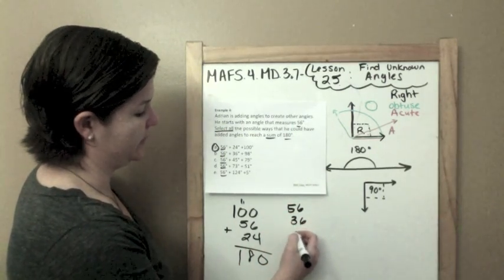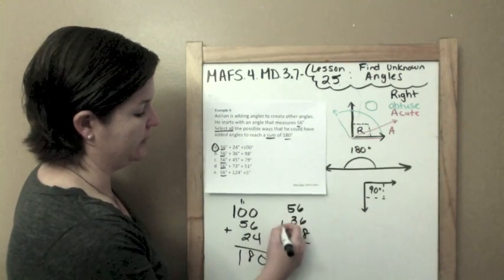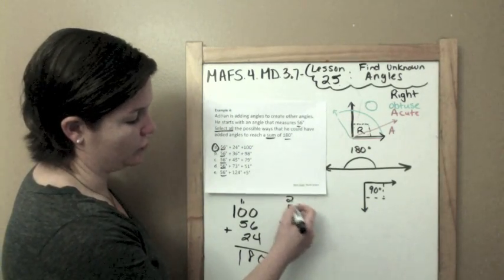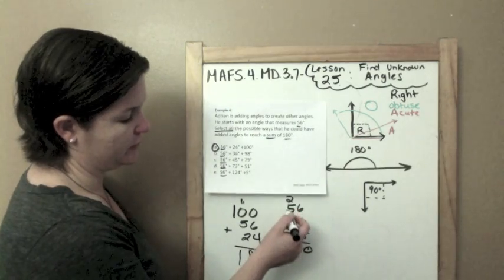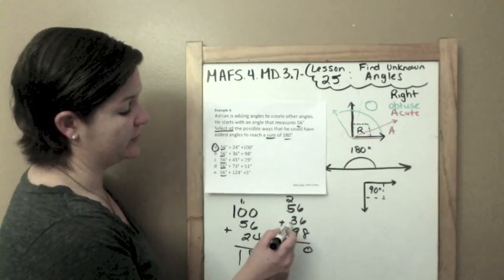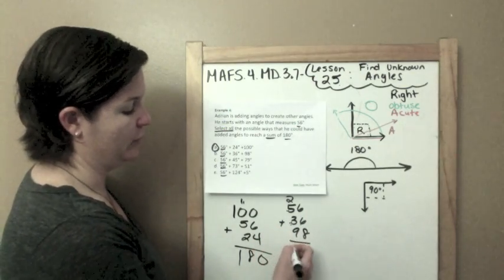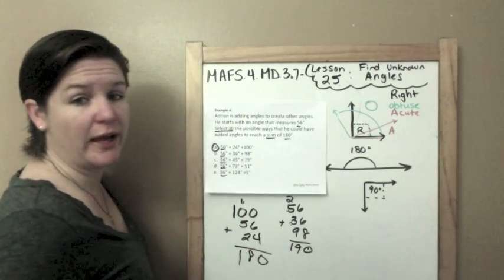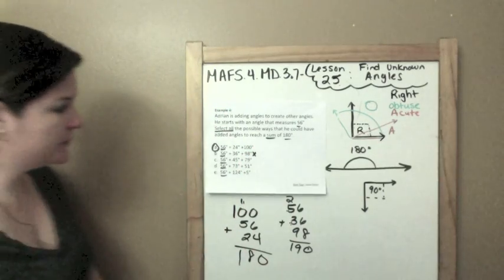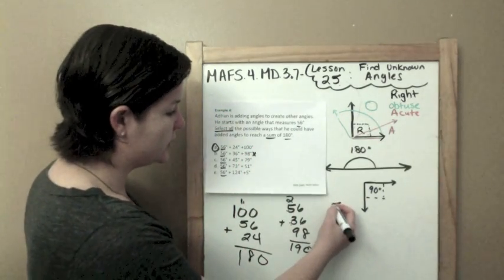56, 36, 98. 6 plus 6 is 12. Plus 8 is 20. 2 plus 5 is 7. Plus 10. I'm sorry. 7 plus 3 is 10. That would be 190. When we add the 9, we add the 9. That's too much. Too much.